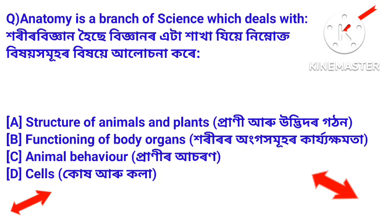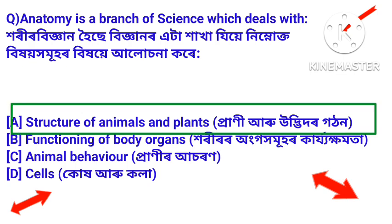Next question: anatomy is a branch of science which deals with — horir bigyan hoi se bigyanor etha khakha. Answer: anatomy is a branch of science which deals with structure of animals and plants. Horir bigyan hoi se bigyanor etha khakha ji e prani aru udbidhar gothanor khomporke alu sona gore.